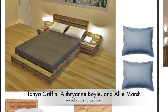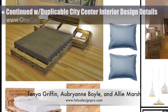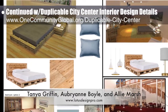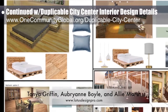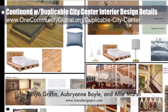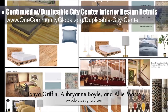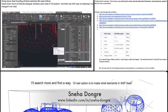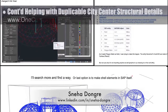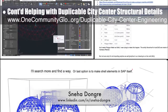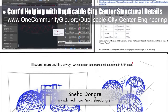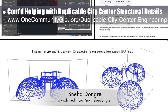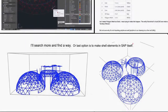Tanya Griffin, Aubrienne Boyle, and Allie Marsh, interior designers from Lotus Design Pros, completed their 19th week helping with the duplicable city center interior design details. This week's focus was finishing the kitchen storyboards and initial research and development of the first-bedroom storyboards. Sneha Dongre, structural engineer, continued with her 12th week on the duplicable city center structural details, focusing on problem-solving a way to import the floors from AutoCAD into SAP 2000.